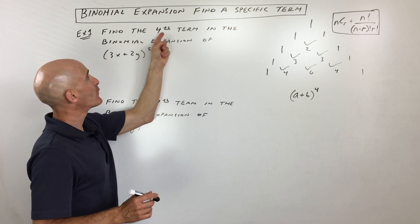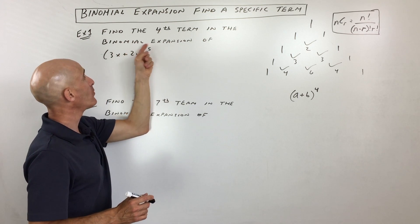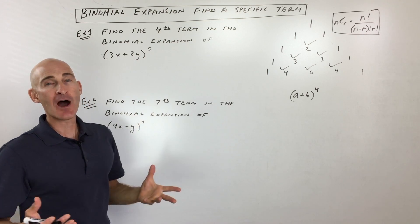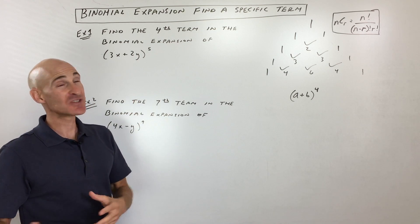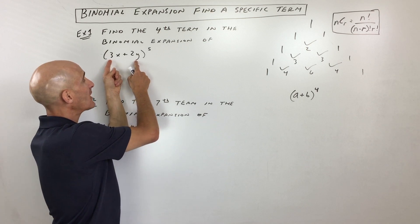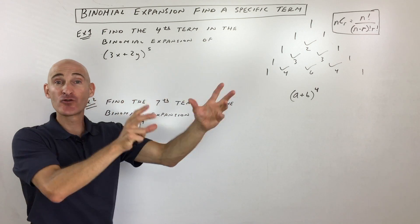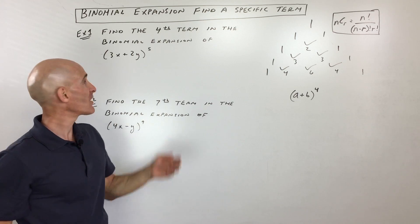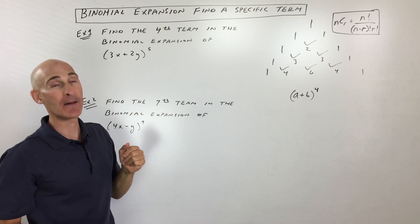The first example says find the fourth term in the binomial expansion of 3x plus 2y to the fifth power. Now, one way to do this, of course this is not the best way, is to take this quantity and multiply it, have five groups and multiply it all together. But that's going to take a long time to foil all that out, combine like terms, and so on.